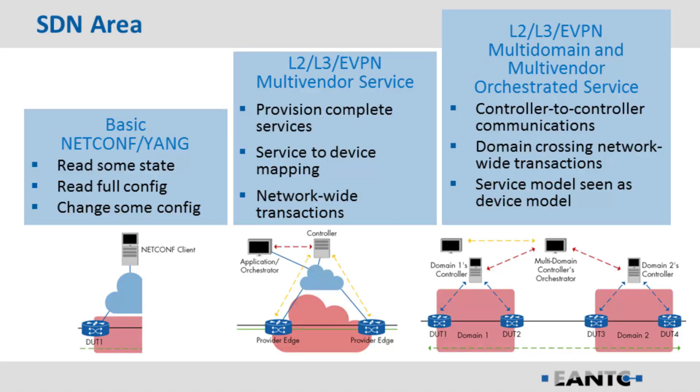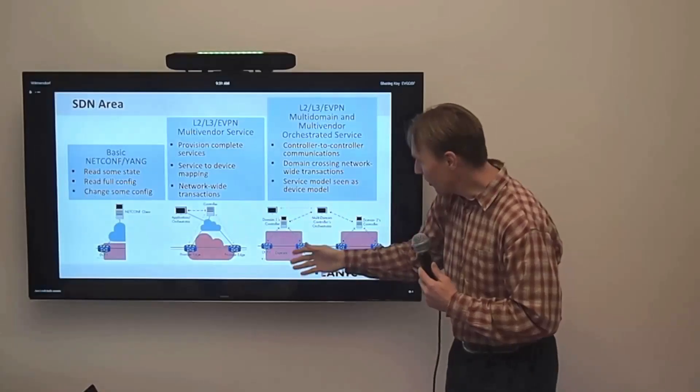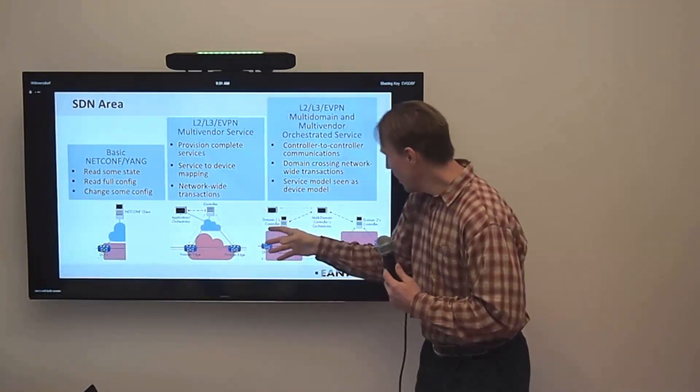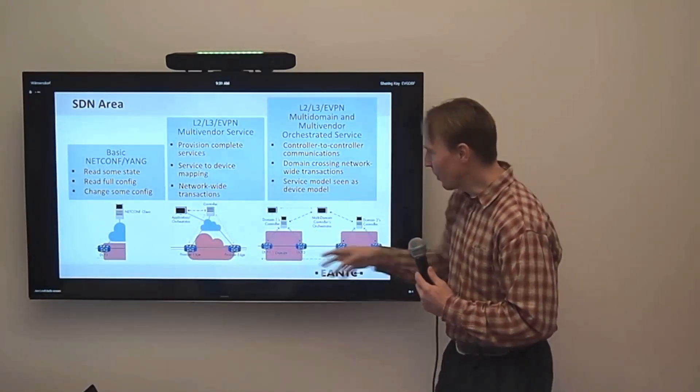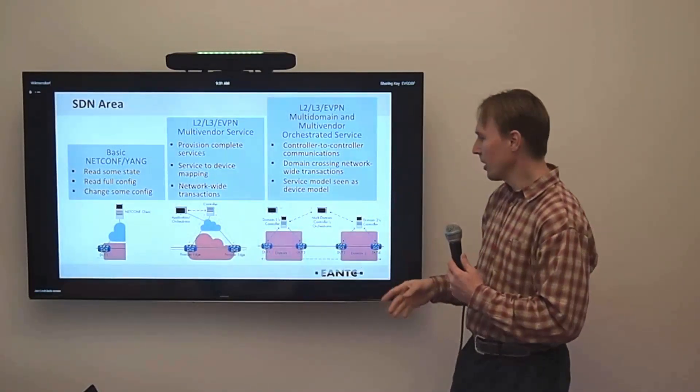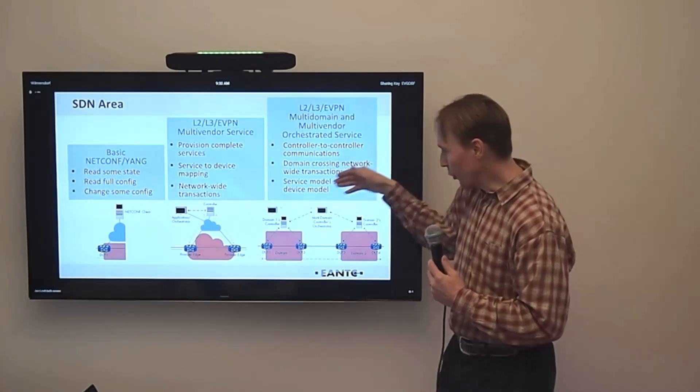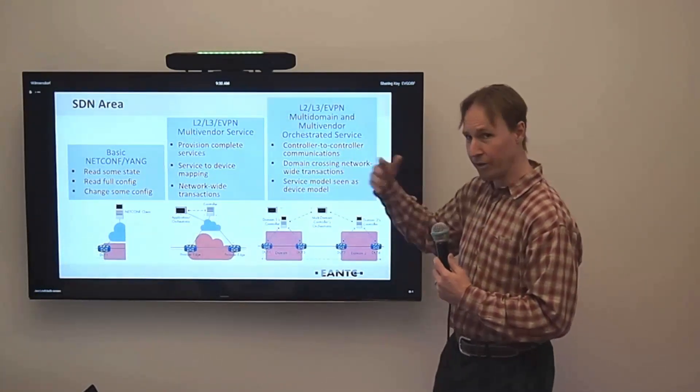And then, if we want to go real fancy, we have this multi-domain, multi-vendor orchestrated service activation, where you have one domain on the left here, which is an L2 domain, pretty much like this one. And on the right hand, we have one more like this, but it's an EVPN sitting over here. And then, on top of the controllers here, we have an orchestrator that is sending down the commands to each of the controllers that now is the time to provision this.